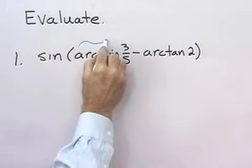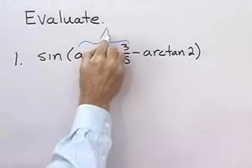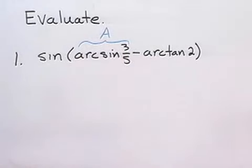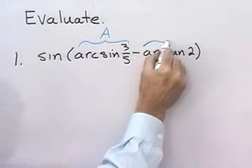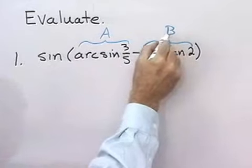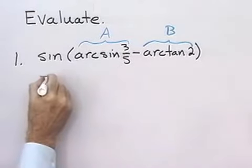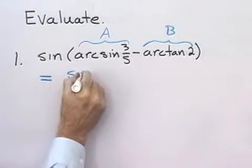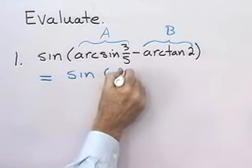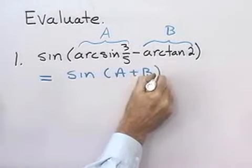This is just an angle. So, I'm going to call that what it is, an angle. I'll just say that's angle A. And then this, I'm going to say is angle B, and that means that my expression is really the sine of A plus B.